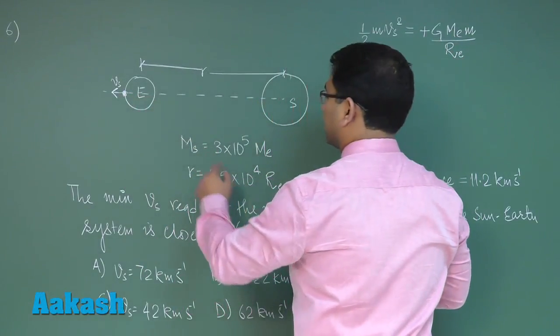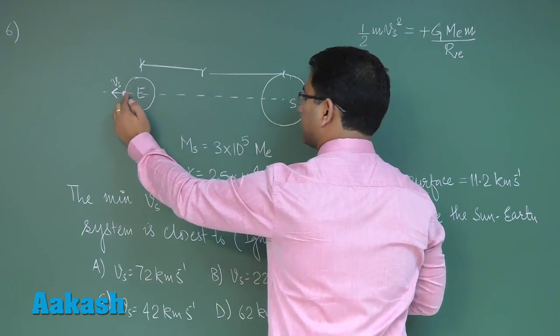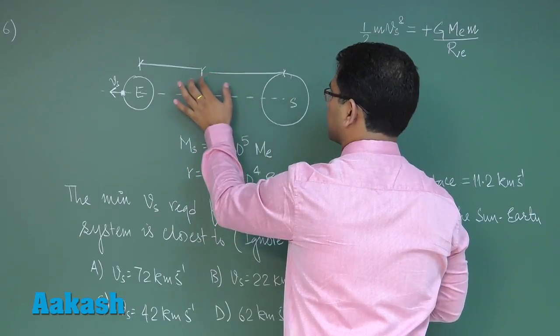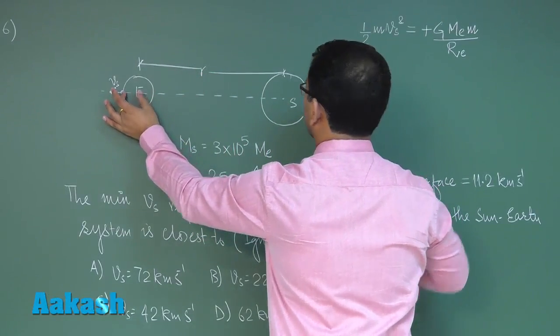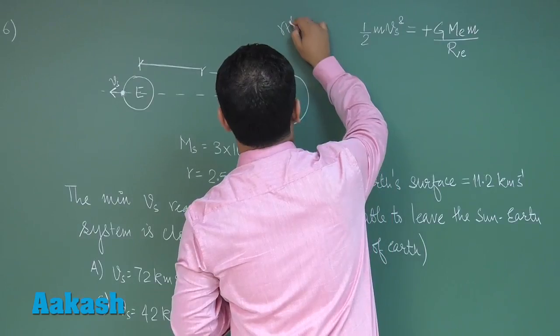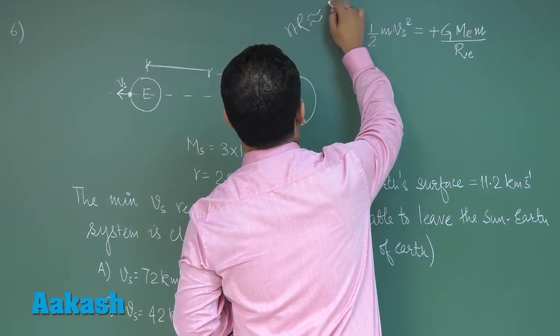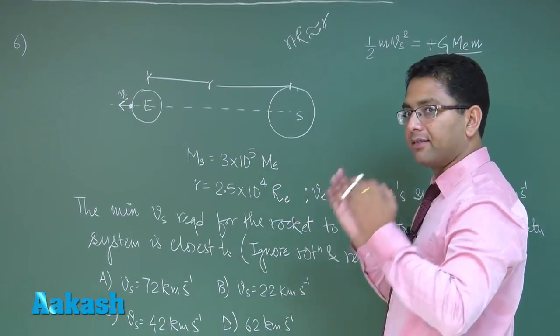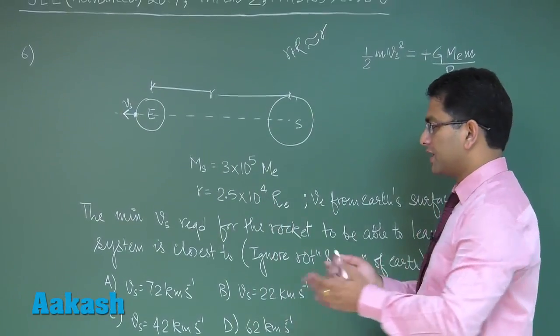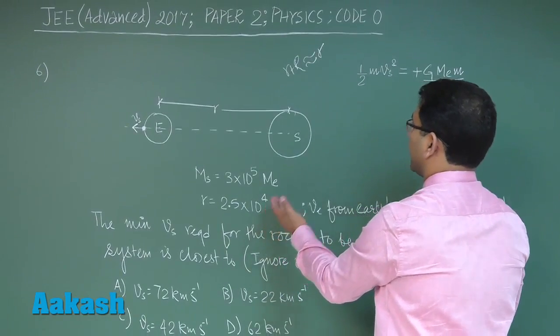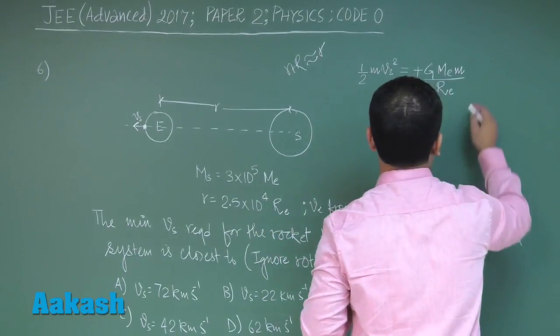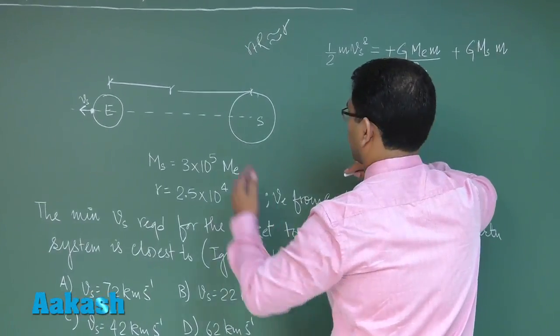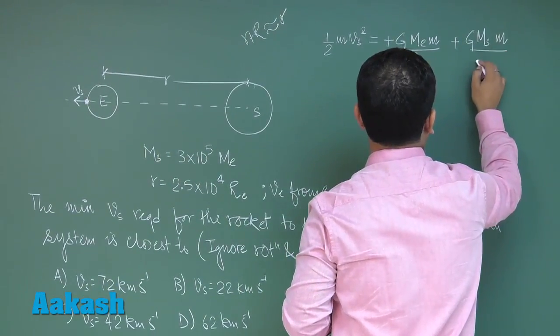And the potential energy between this rocket and the sun will have a distance of small r plus capital R. But small r plus capital R can be very properly written as small r with a minute error, and that error would be tolerable because you see the distance, and that would make the calculation simpler. So plus G mass of sun times mass of rocket to be launched divided by small r.